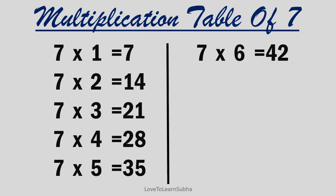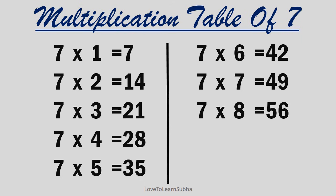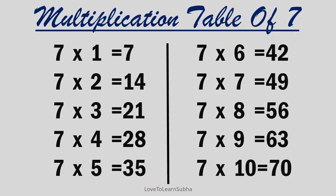7 sixes are 42, 7 sevens are 49, 7 eights are 56, 7 nines are 63, 7 tens are 70.